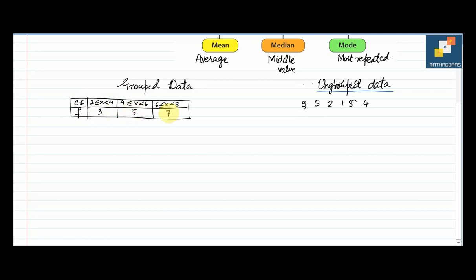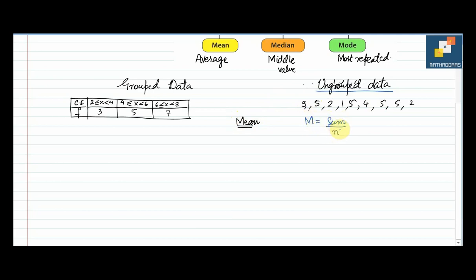Now starting with mean. Mean for ungrouped data: the working formula is very simple — mean equals sum divided by n. If you add all those numbers: 3+5+2+1+5+4+10+2 = 32. We have 9 terms, so 32 divided by 9 gives a mean of 3.55. That is the mean of ungrouped data.